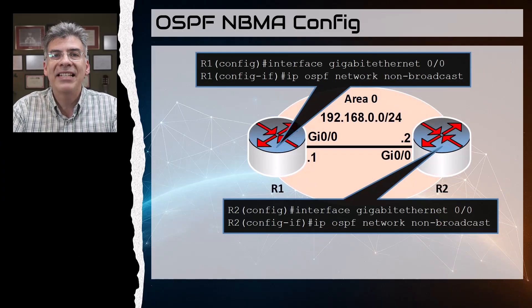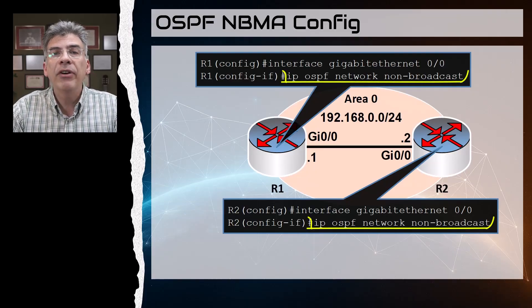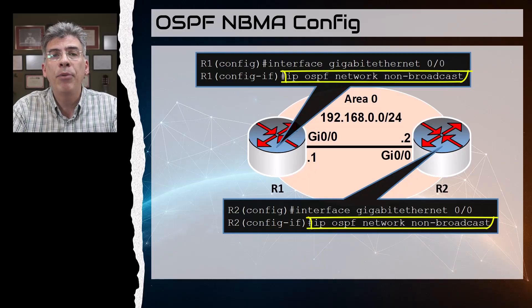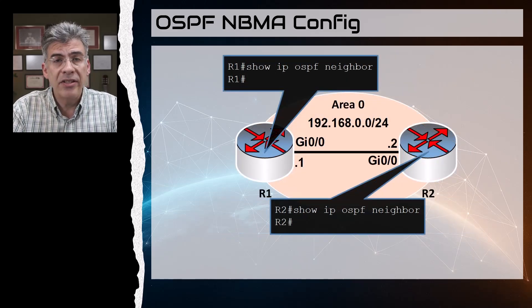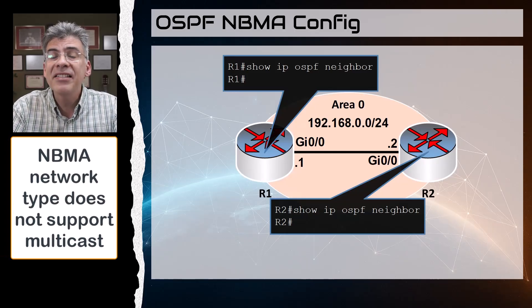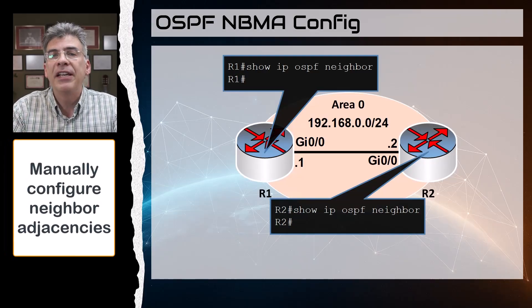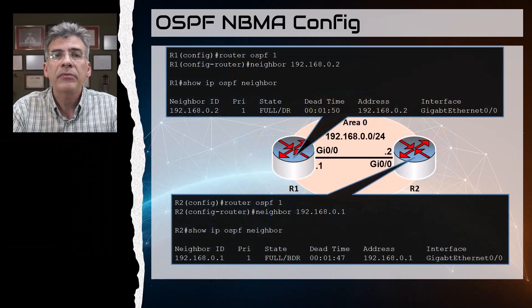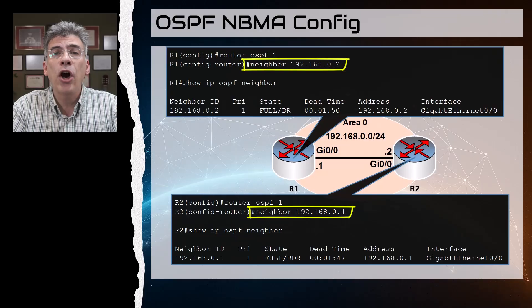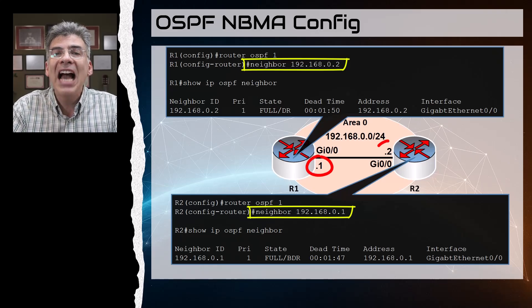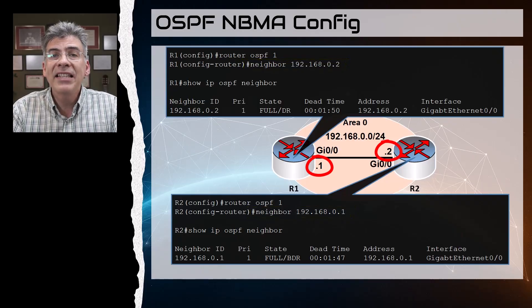Next we have the non-broadcast multiple access network type, or NBMA. This is how we configure it on each router — it's a simple interface command on both ends. There is actually no adjacency because an NBMA network doesn't support multicast — that's what the non-broadcast indicates. This network type requires that we manually configure the neighbor adjacencies. To do this, we issue the neighbor command on the OSPF configuration of both R1 and R2, indicating the IP address of the other router.